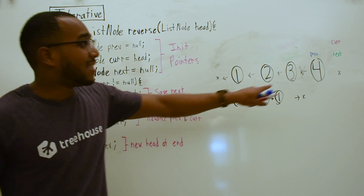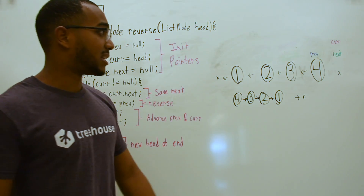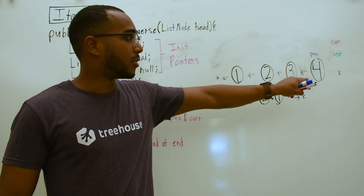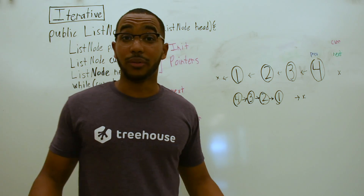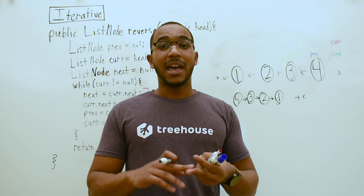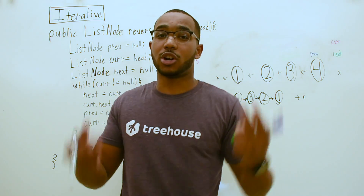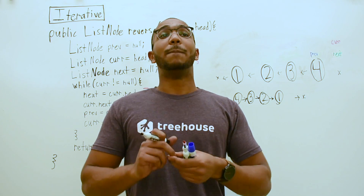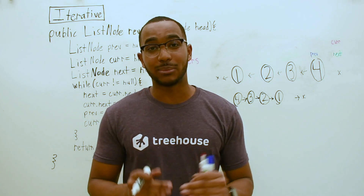That's how we do it iteratively. That's where our pointers end up and now we have our reversed list. This runs in O(n) time and constant space. Now let's do it the recursive way, which also runs in O(n) time because we're touching n nodes, but it runs in O(n) space because we're going to create n stack frames for the recursion.